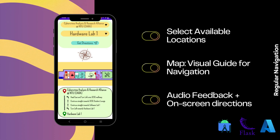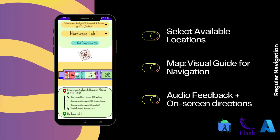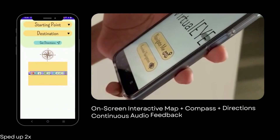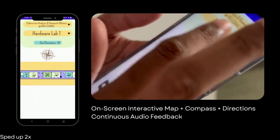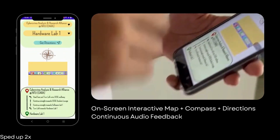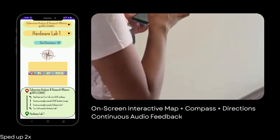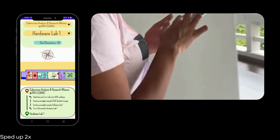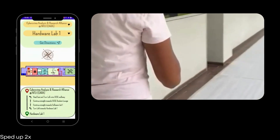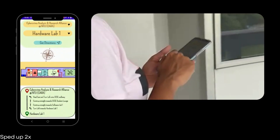Regular Navigation is a vision-based indoor navigation mode that allows the user to select their locations. They are navigated with the aid of an on-screen map and compass with audio feedback. In this demonstration, the user selects their locations using drop-down menus. The selections are sent to the cloud server for path calculation, and the on-screen map is continuously updated with directions and audio cues on where the user has arrived.